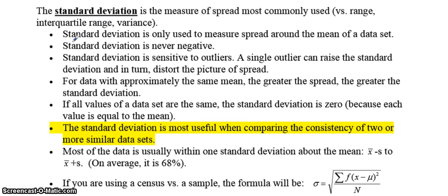The standard deviation is only used to measure how the data is spread around the mean. The standard deviation is never negative. The standard deviation is sensitive to outliers. A single outlier can raise the standard deviation and in turn distort the picture of spread. For data with approximately the same mean, the greater the spread, the greater the standard deviation.